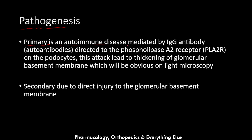Now let's talk about the pathogenesis. The primary type is an autoimmune disease mediated by IgG autoantibodies directed to the phospholipase A2 receptor, also known as the PLA2R receptor, on the podocytes. This attack leads to thickening of the glomerular basement membrane, which is obvious on light microscopy of a biopsy. The secondary type is due to direct injury to the glomerular basement membrane by infections, tumors, and drugs, also leading to the same thickening.